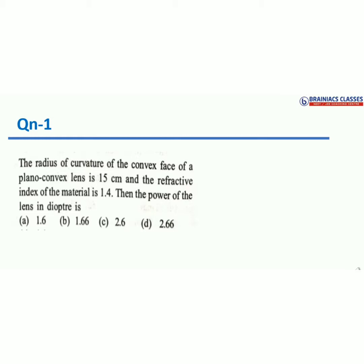The radius of curvature of the convex surface is 15 centimeters. We can say R = 15 cm or 0.15 meters. For a convex surface, this is taken as a positive quantity, so R = +15 cm. We'll come to sign conventions shortly. The refractive index of the material is 1.4.